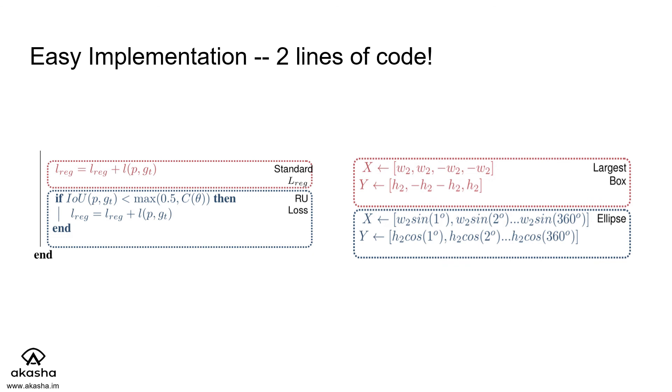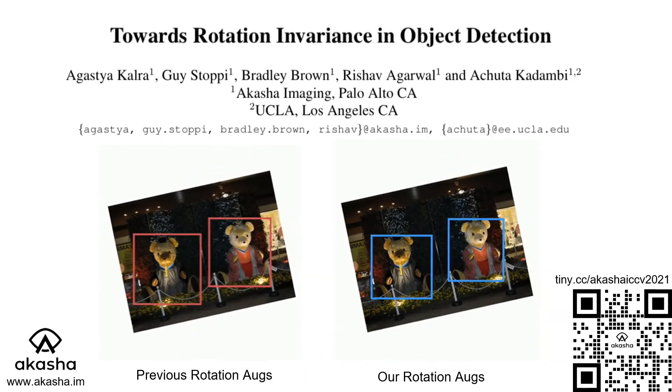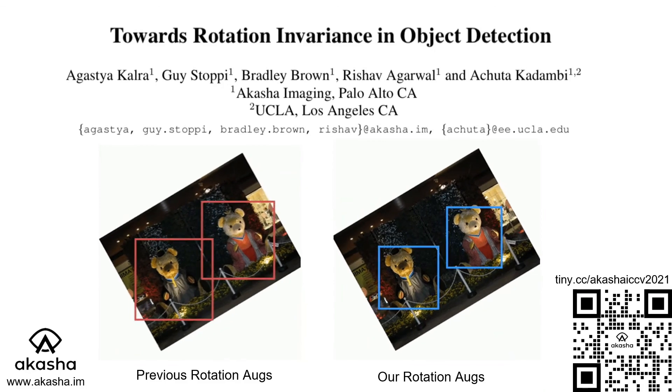Our method is also easy to implement, as it has only a few lines of code to change, which will be made public. We hope that this paper is the next step to rotational invariance in object detection. Thank you for listening.